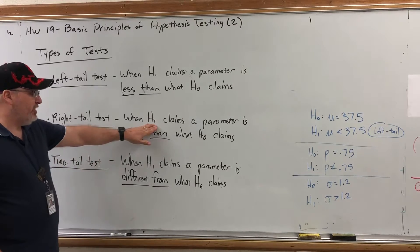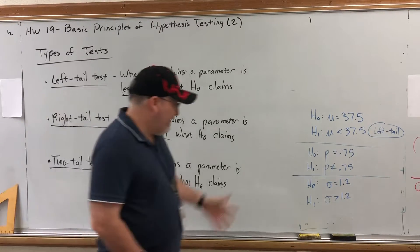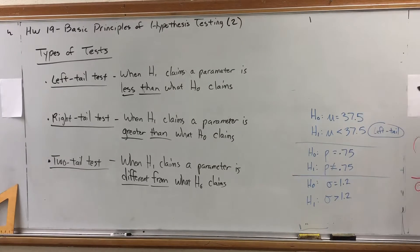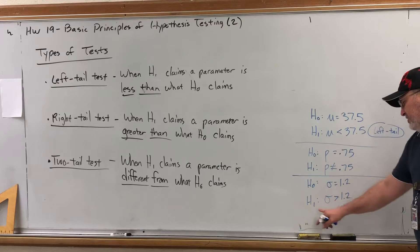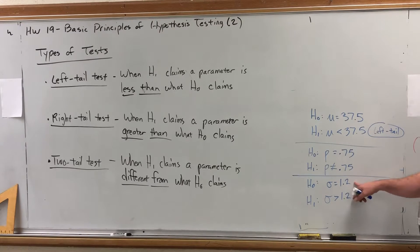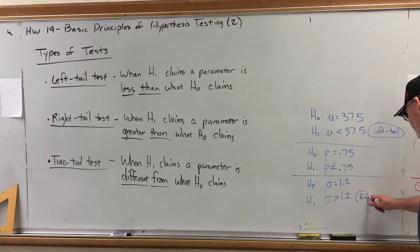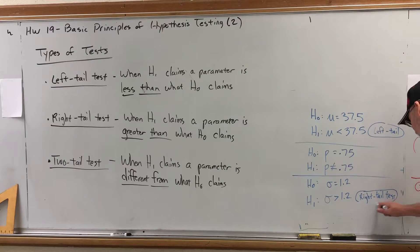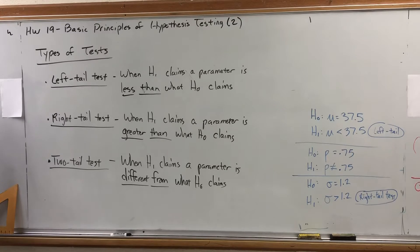By contrast, a right tail test is when the alternative hypothesis H1 claims a parameter is greater than what the null hypothesis claims. Among the remaining pairs of hypotheses, the one whose alternative claims a parameter is greater than a value is the standard deviation example: the alternative claims the population standard deviation is greater than 1.2, compared to the null claiming it equals 1.2. Greater than in the alternative hypothesis is a right tail test.